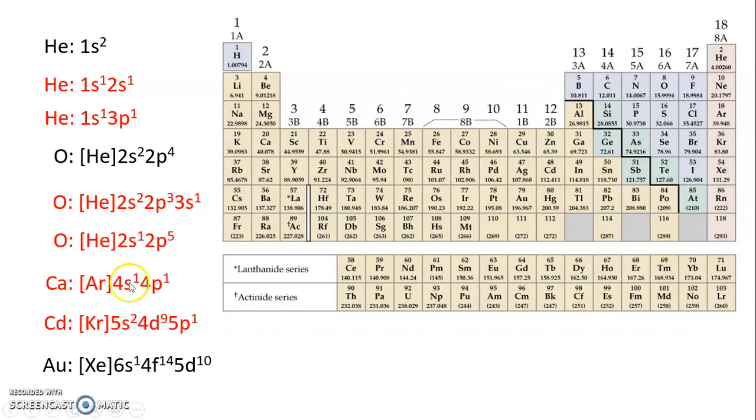when you have something that's in group 6 or group 11 that wants to be naturally a D4 or a D9 configuration, we have to do that promotion of one of the S orbital electrons into the D shell. So in this case, it's totally filled. If it were in group 6, you would do a promotion so that you would attain that stable half-filled configuration.